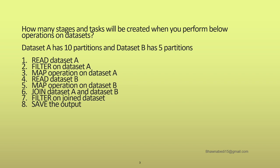So for example, let's say your interviewer tells you that you have a dataset A which has 10 partitions and you have a dataset B which has 5 partitions. You try to read dataset A, filter dataset A, then do a map operation on dataset A. After that you read dataset B and apply a map transformation on dataset B. Then you join the output from A and B, apply a filter on the join result, and save the output. In this whole process, how many tasks and how many stages would be created?